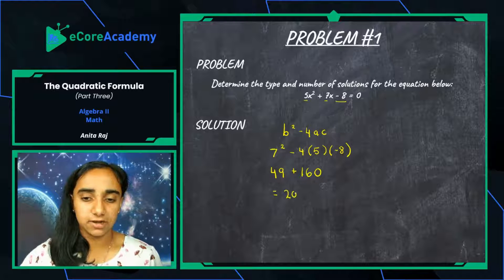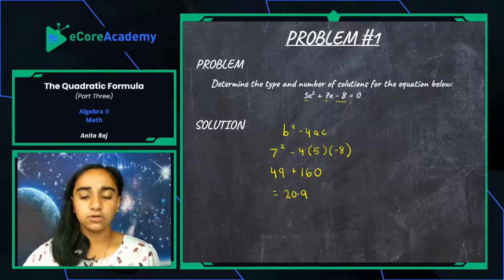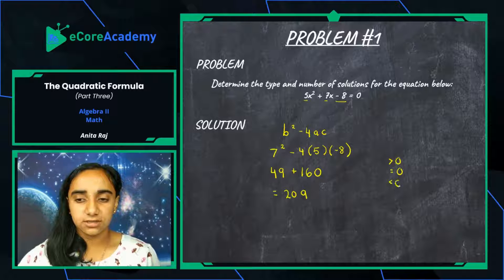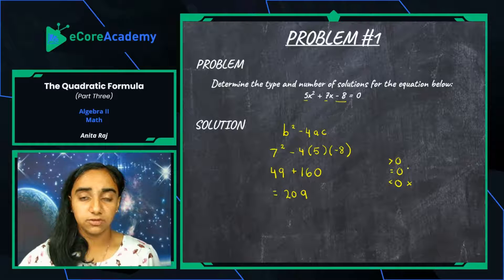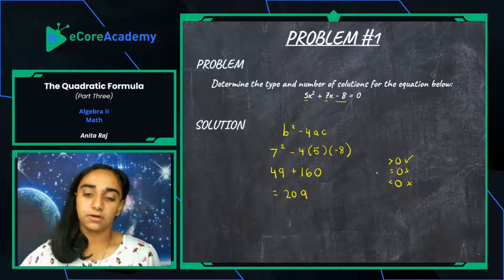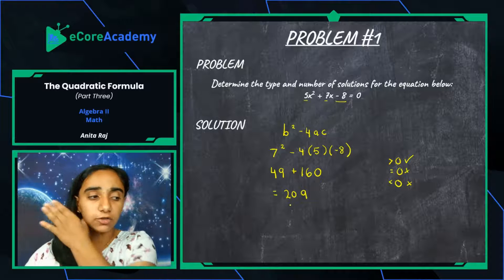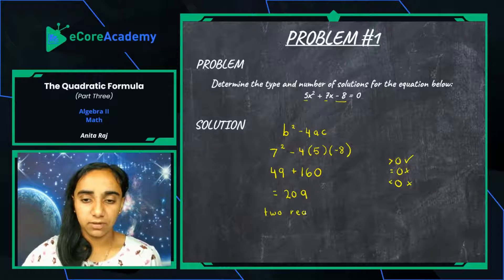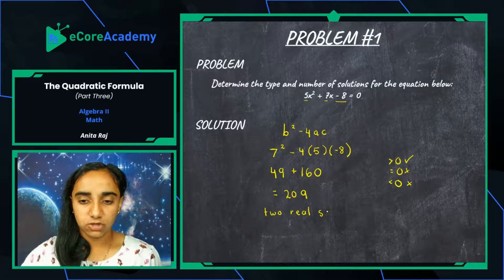Adding those together we get 209. We ask ourselves: is it greater than zero, equal to zero, or less than zero? Well, it's not negative and it's definitely not equal to zero — 209 is a positive number, quite large. So we can readily say it is greater than zero. From our chart, if it's greater than zero this quadratic should have two real solutions.